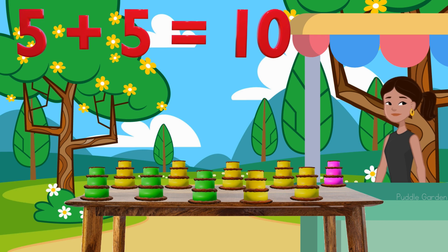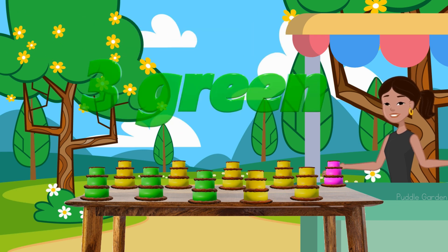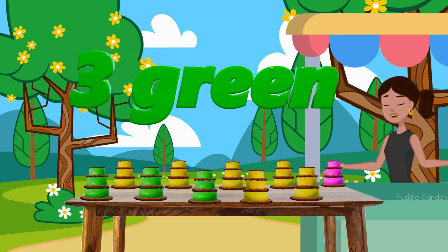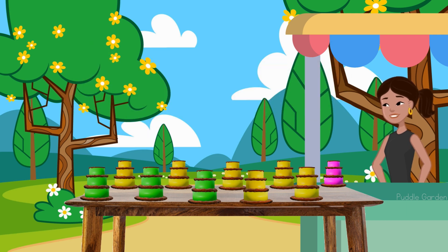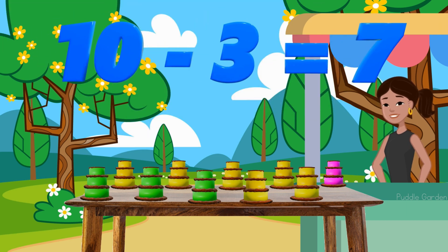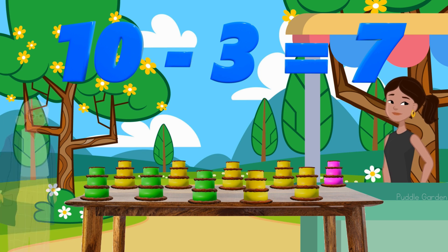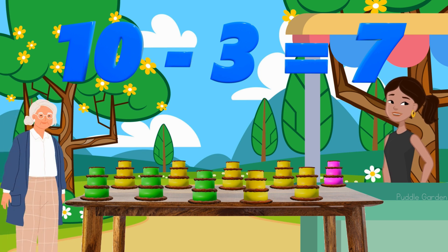Great work. Our next order says they want three green cakes. They want three green cakes and we have 10 of them. So 10 subtract three — we're left with seven cakes. Here's your order.